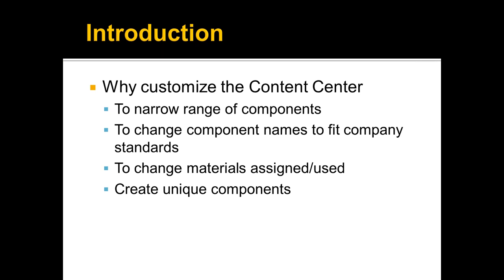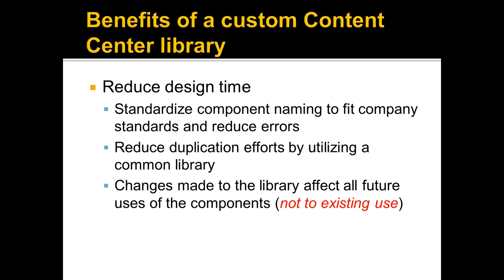The other benefit for customizing the Content Center is creating unique components to put in there. We all have our own brackets, housings, pillow blocks, or other things we buy or make that aren't in the Content Center, and we can add them to populate the library. More benefits: you're going to reduce your design time, standardize your component naming to fit your company standards, which cuts down on errors because everything is driven from that database table. Reduce duplication because you're pulling from a common library, and any changes made to the library will affect all components you pull out in the future.